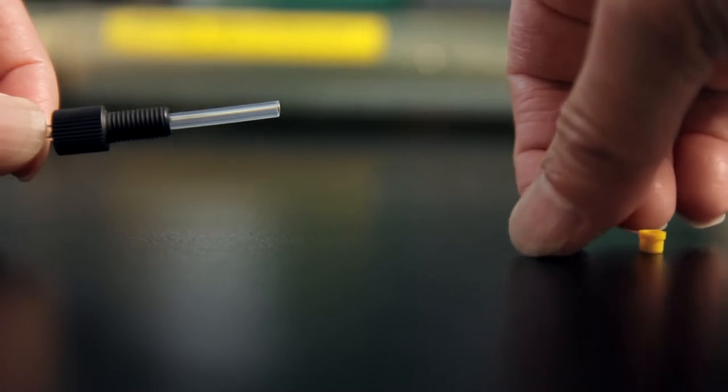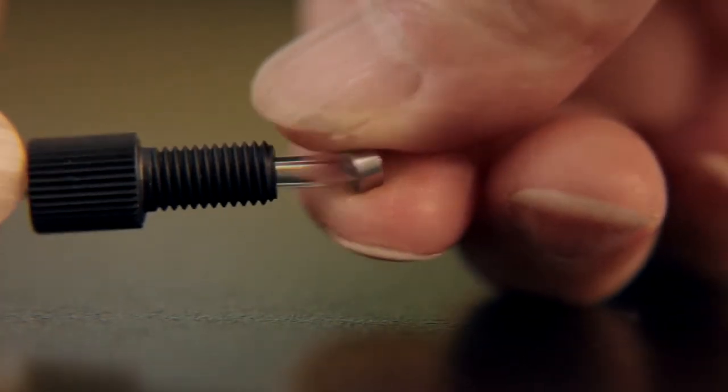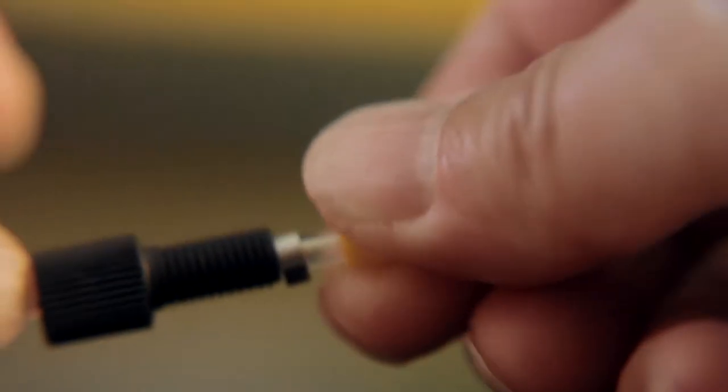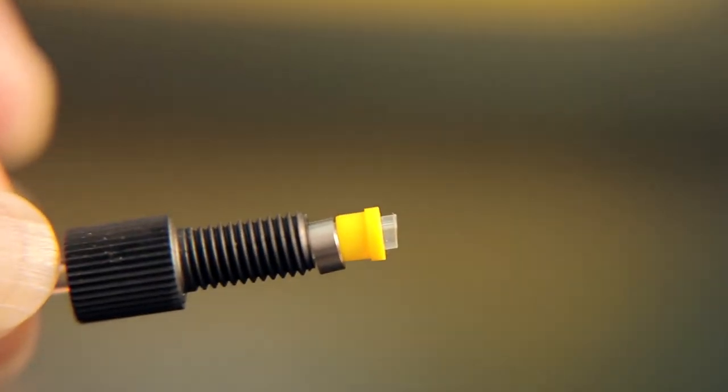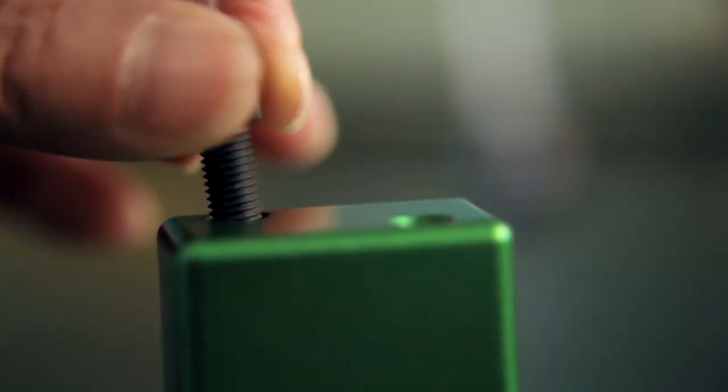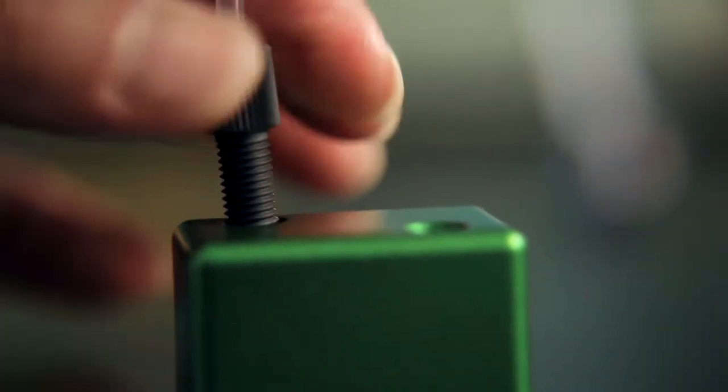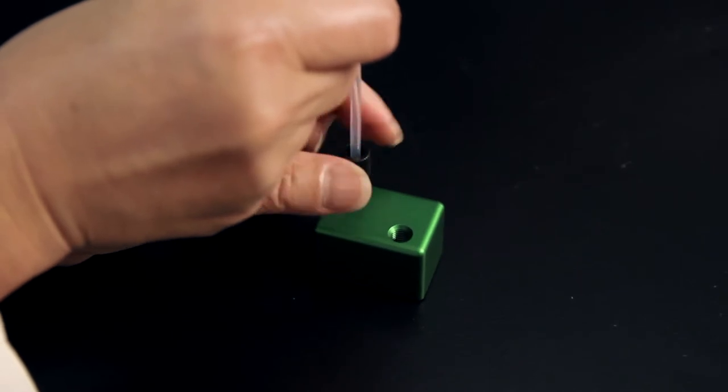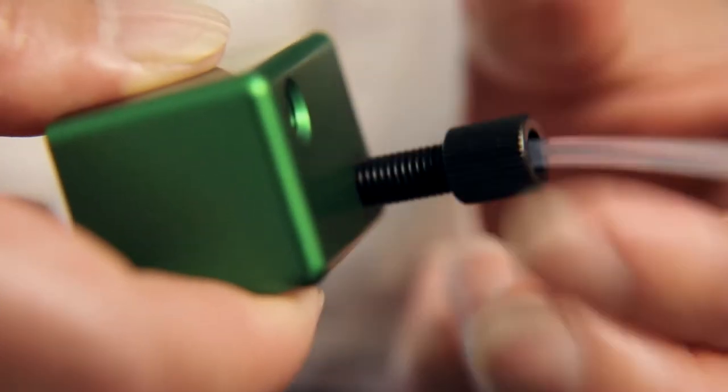Next, slide a 1/4-28 nut onto the sample end of the tubing, followed by a lock ring and a yellow ferrule, with the blunt end of the ferrule facing away from the nut. Push the tubing through the fitting until the tubing reaches the bottom of the NGC fitting tightener, and then slide the ferrule and nut toward the tightener and finger tighten.